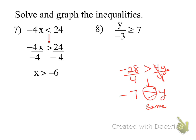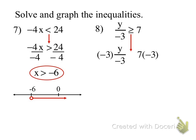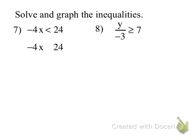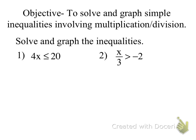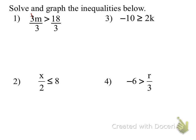Also, notice this example: negative 28 is greater than 4y. That doesn't mean we flip the inequality — I still just divide by 4. I didn't divide by a negative. There's a negative in it, but I did not divide by it. The inequality stays the same. We only flip when we divide or multiply by a negative.